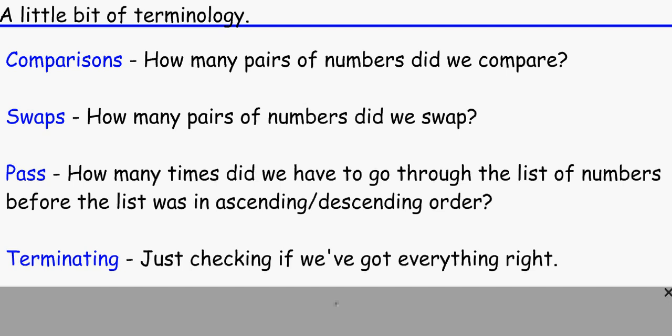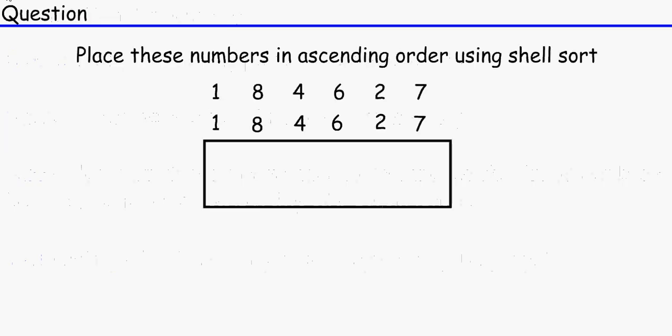Going over the terminology here which I've done in bubble sort, we've got comparison, swap, pass, and terminating. Just going to quickly move on from that. If you want to look at the terminology, please pause the video. So the question, bang on straight to the question. Place these numbers in ascending order using shell sort.